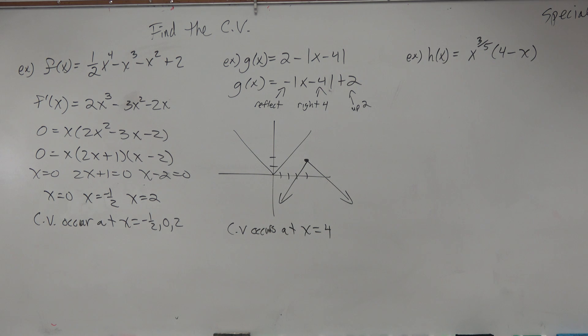Remember, the derivative set equal to 0 gives us a horizontal tangent. Corners do not have horizontal tangents.